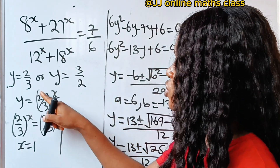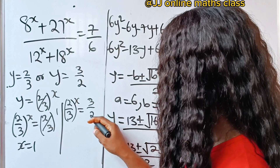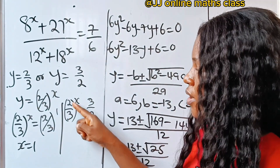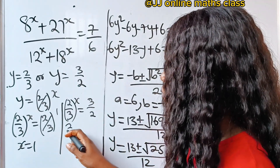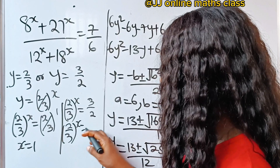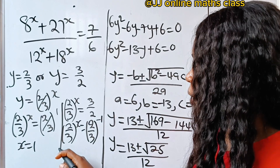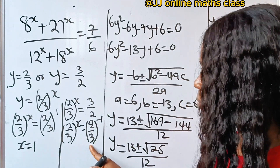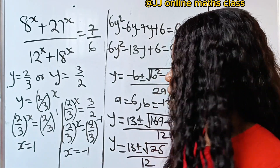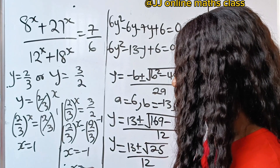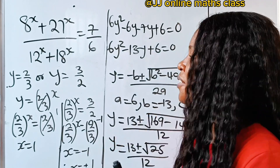For the second value, y = 3/2: so (2/3)^x = 3/2. Since 3/2 is the inverse of 2/3, we write (2/3)^x = (2/3)^(−1). With the same base on both sides, the powers are equal, giving x = −1. Therefore, x equals plus or minus 1. Thank you so much for watching, have a lovely day.